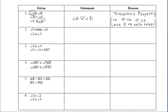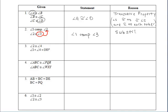In example two, we have a statement: angle one is complementary to angle two, but angle two is congruent to angle three. Since angles two and three are congruent, we can replace angle two with angle three in our original complementary statement. Therefore, our conclusion is that angle one must be complementary to angle three. We use the substitution property because we physically replaced angle two with angle three in that statement.